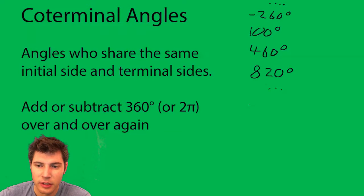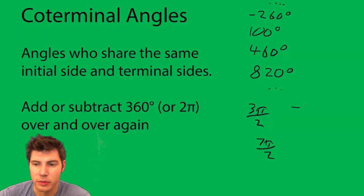Similarly, it could be 3π over 2, and then you could add 2π to get 7π over 2, or subtract 2π to get negative π over 2. All of these are also coterminal with each other.